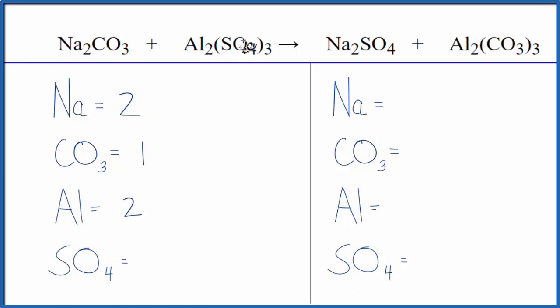Two aluminums, and then the sulfate. Here's the sulfate, here's the sulfate. We have three of the sulfate ions, so three there.